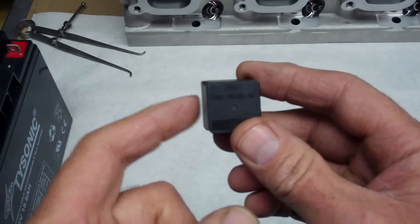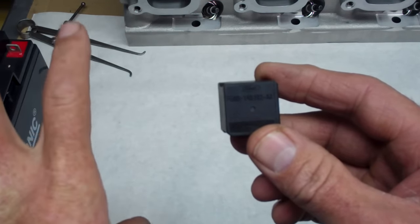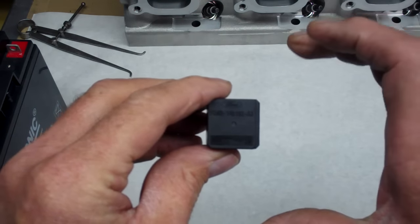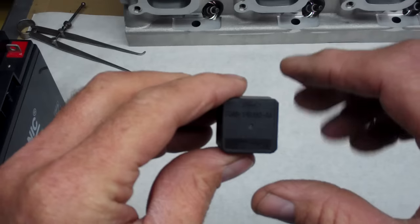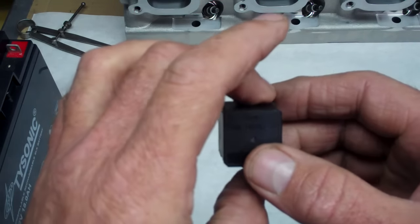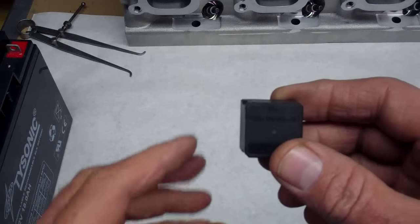The whole intent behind a relay is to allow us to turn on and off a circuit that has a high current load with a smaller current. So we'll use a small amount of amperage to control a circuit that requires a lot of amperage.